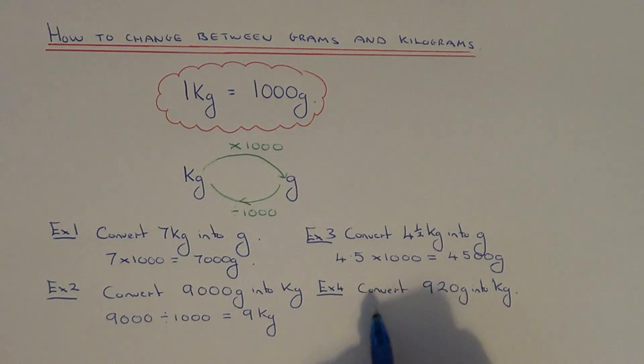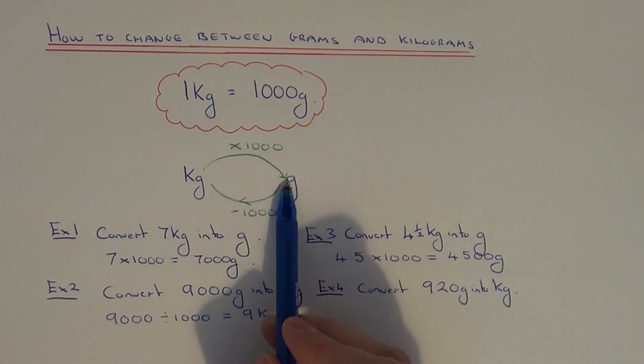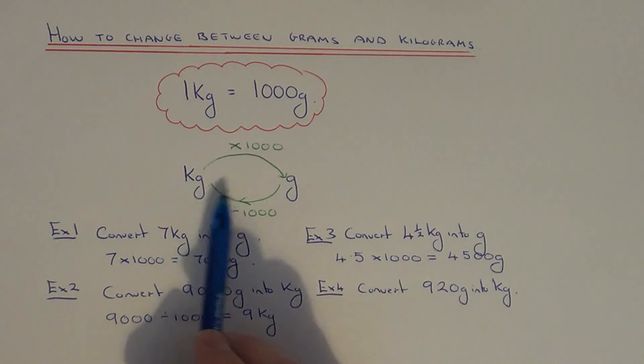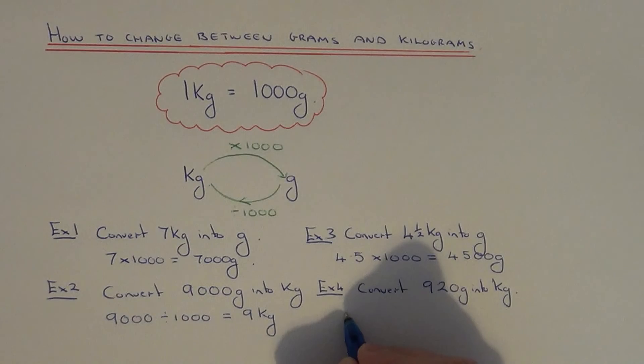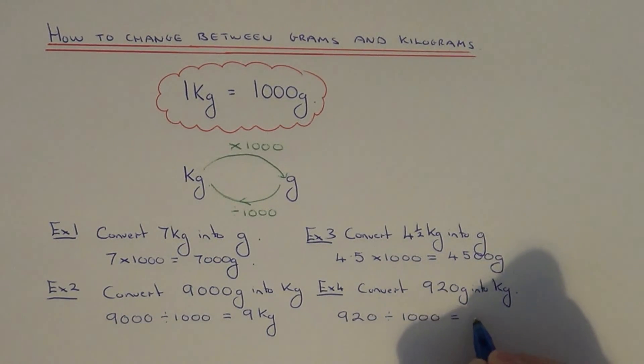Example four, the final example. This time we need to convert nine hundred and twenty grams into kilograms. We're going from grams into kilograms, so we need to divide by a thousand. If we do nine hundred and twenty divided by a thousand, that will give us naught point nine two kilograms.